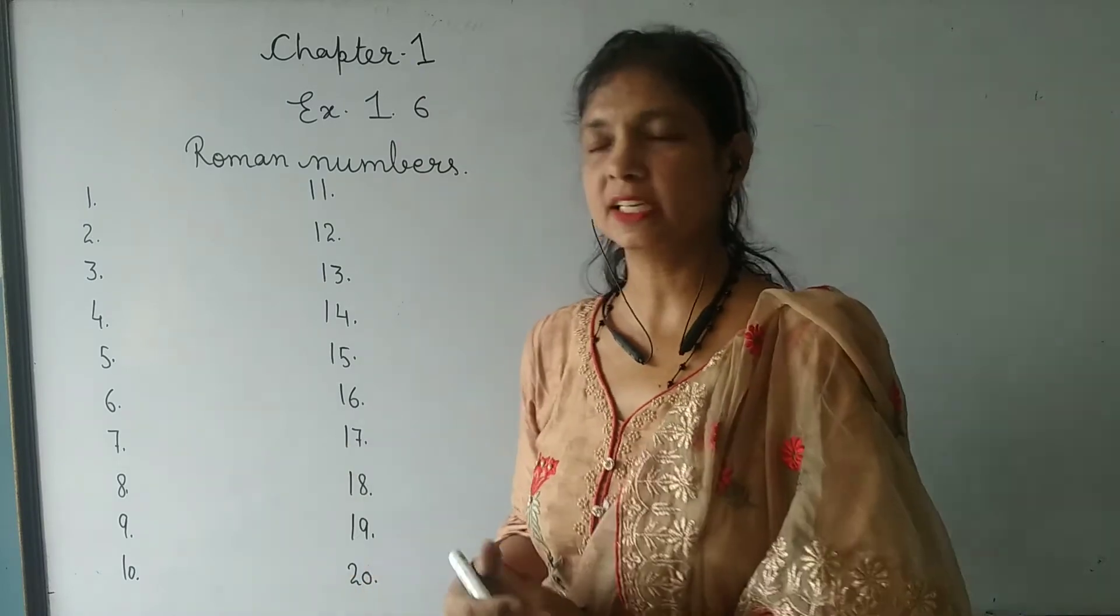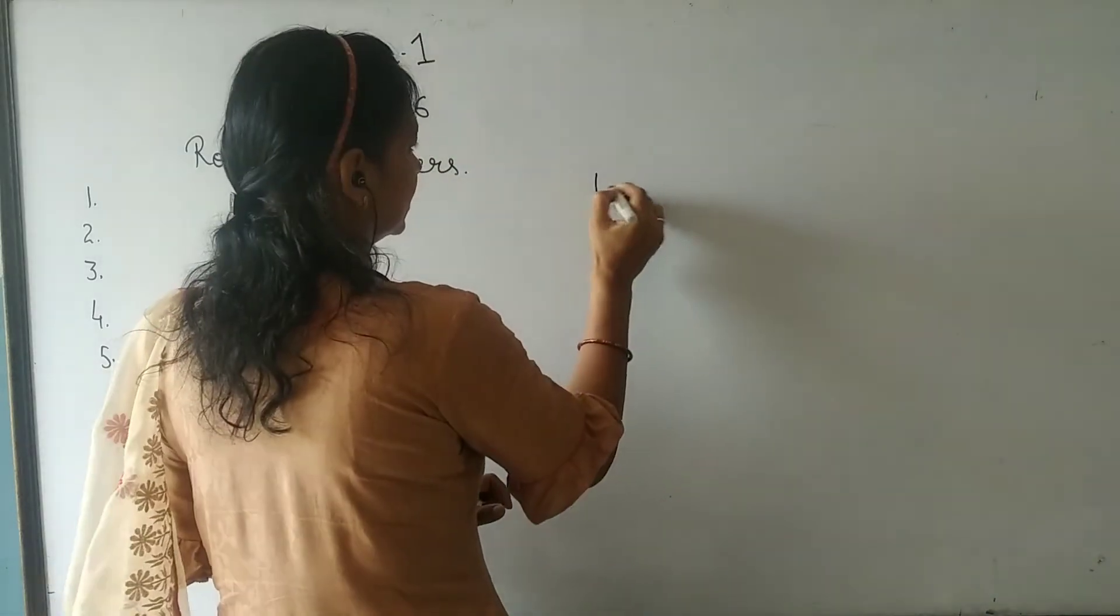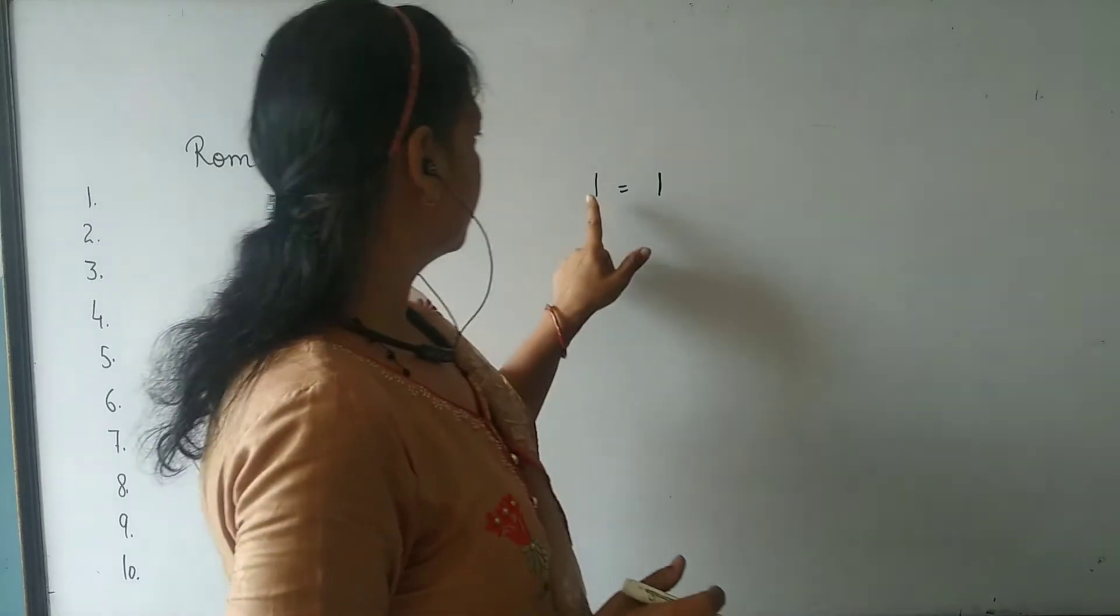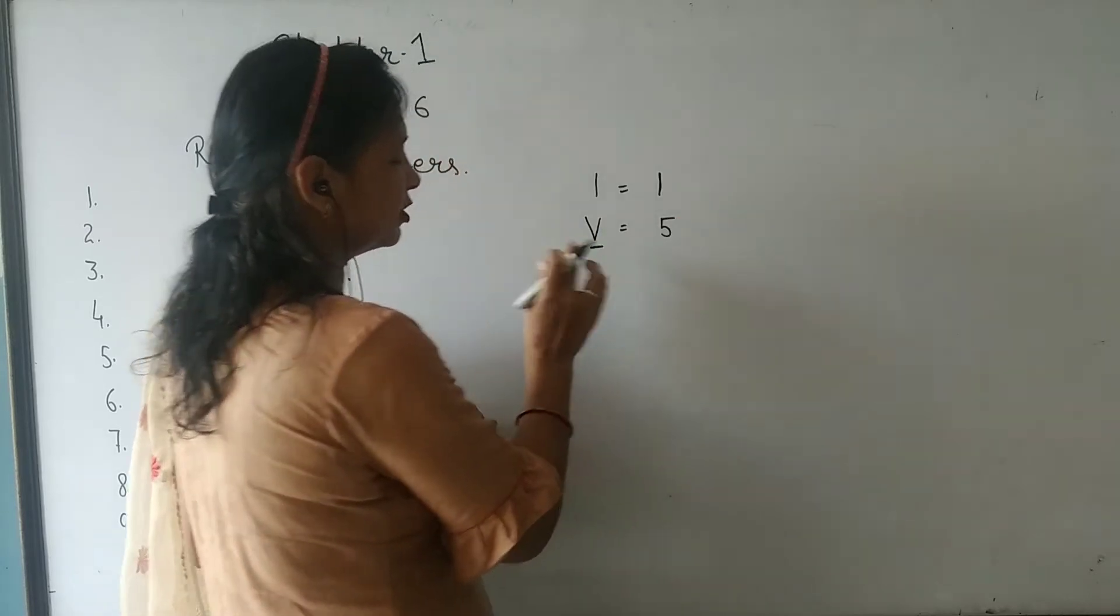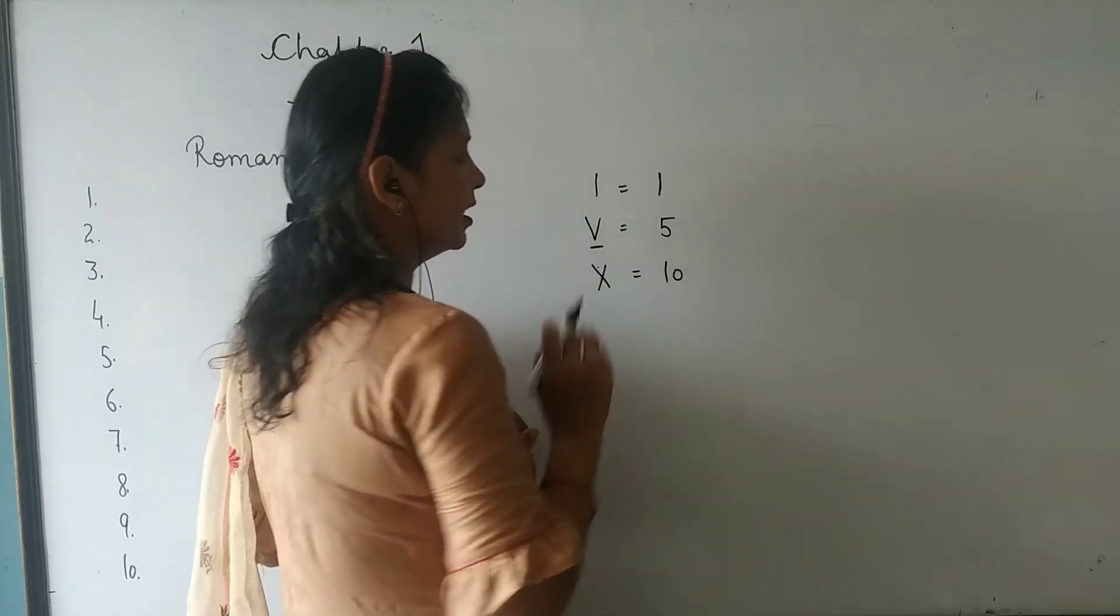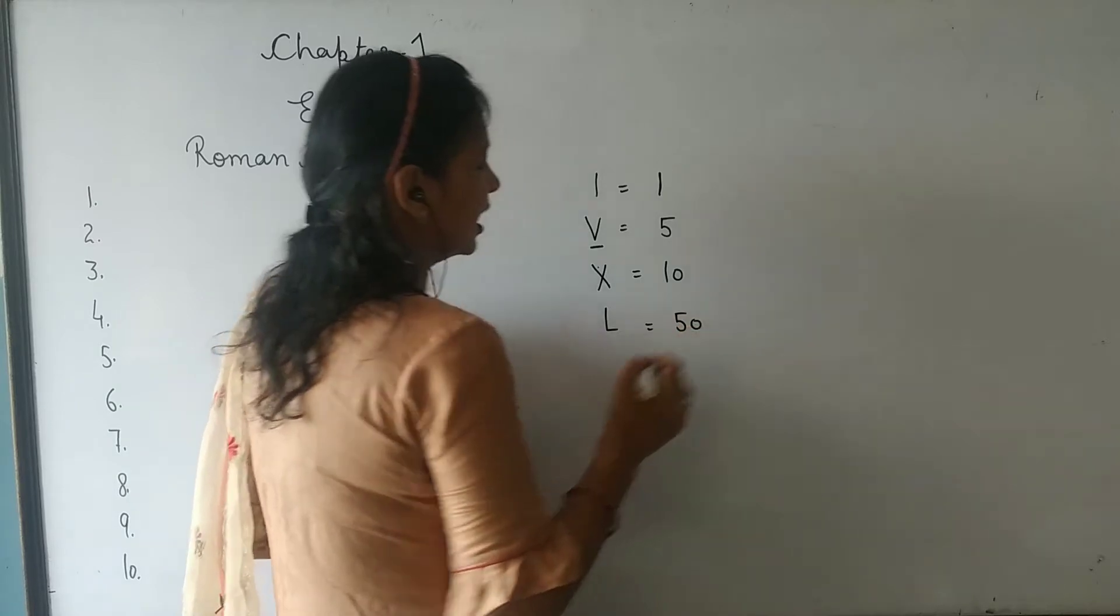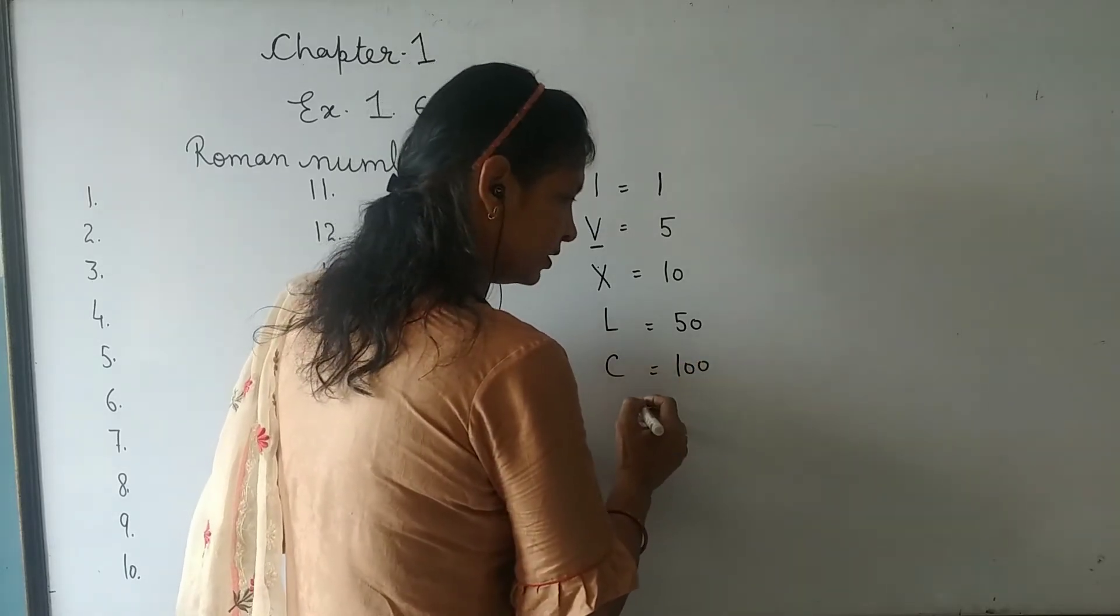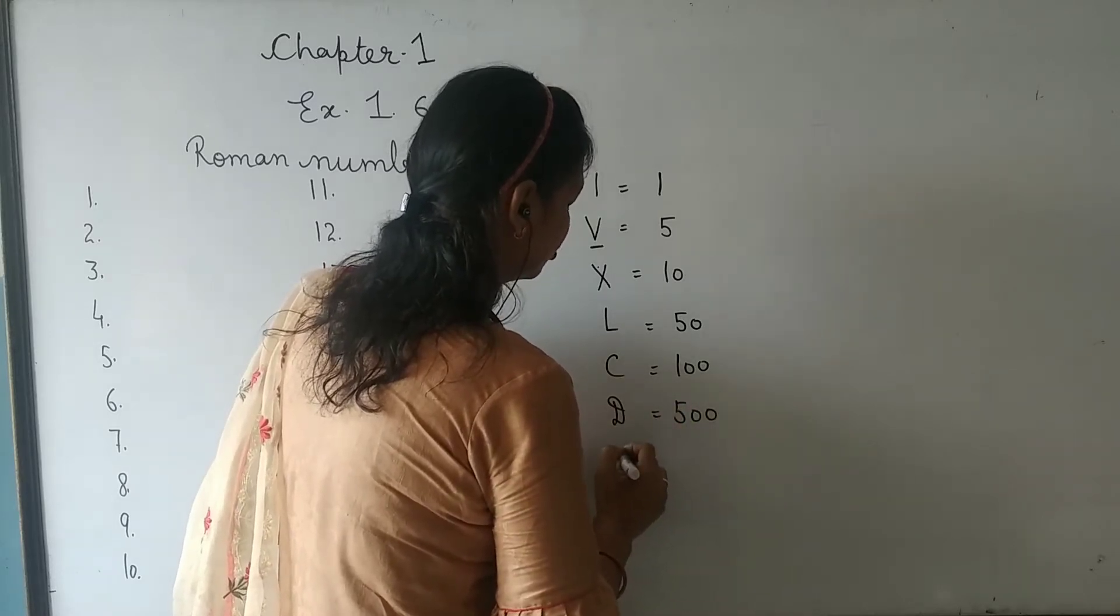They took 7 letters of our English alphabet and called them Roman numbers. How did they write 1? I. The English alphabet word is I. Then 5, we have written V. Then X, X is 10. And then we have L, L is 50. Then C is 100. Then D, D is 500. Then M, M is 1000.